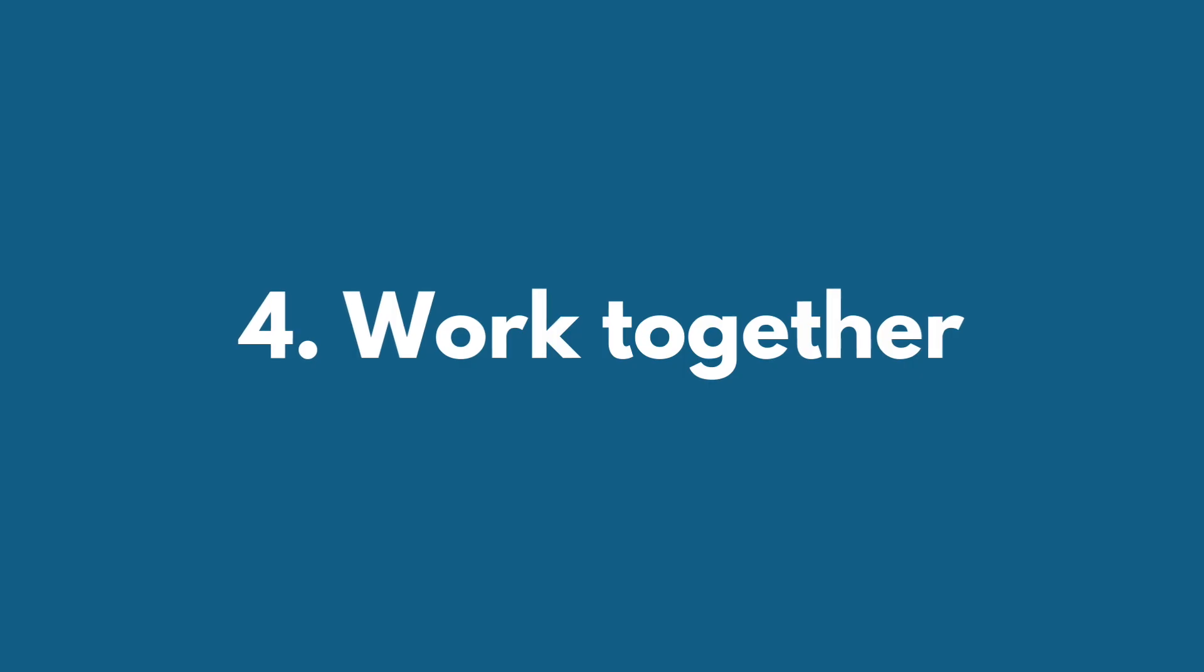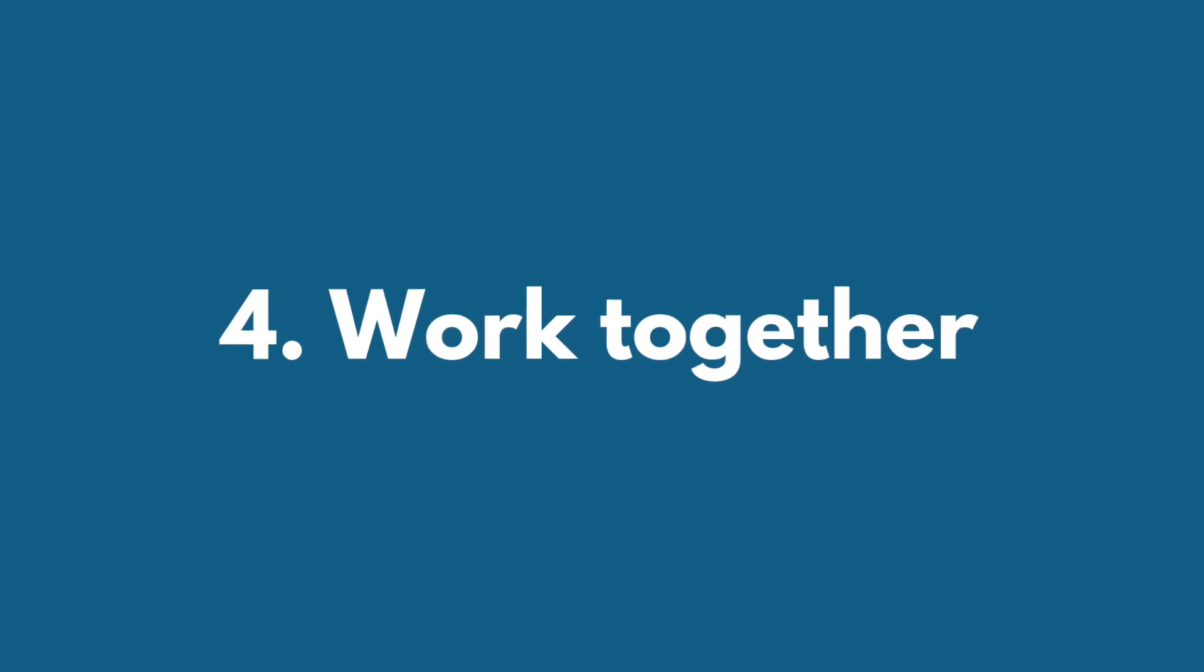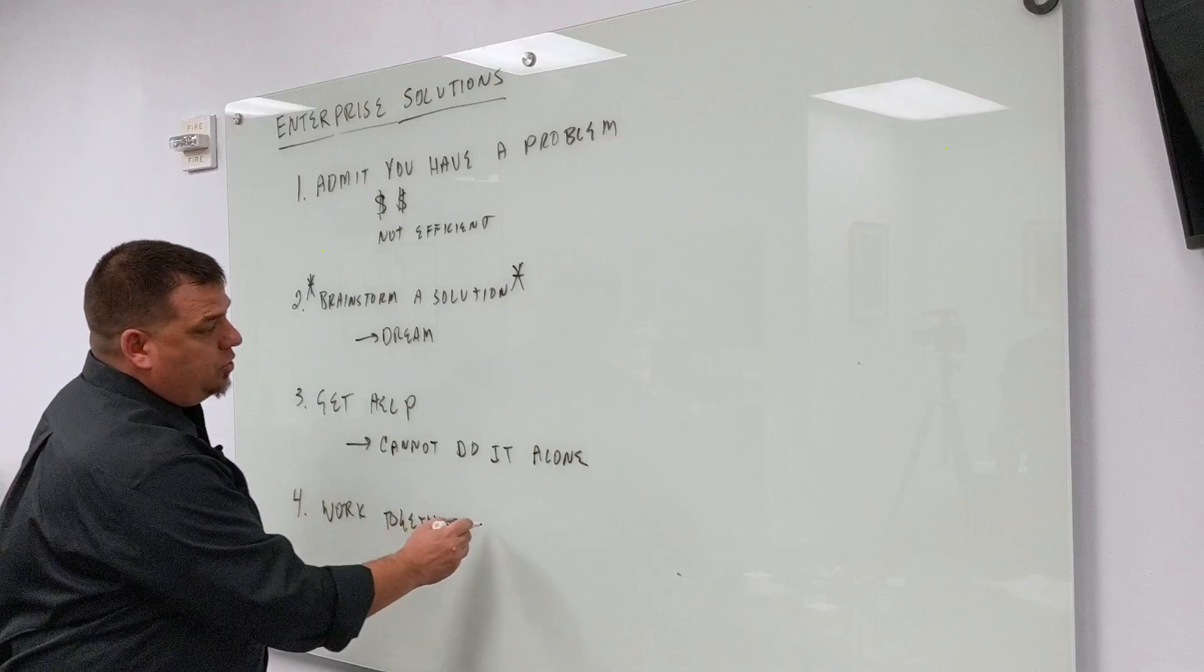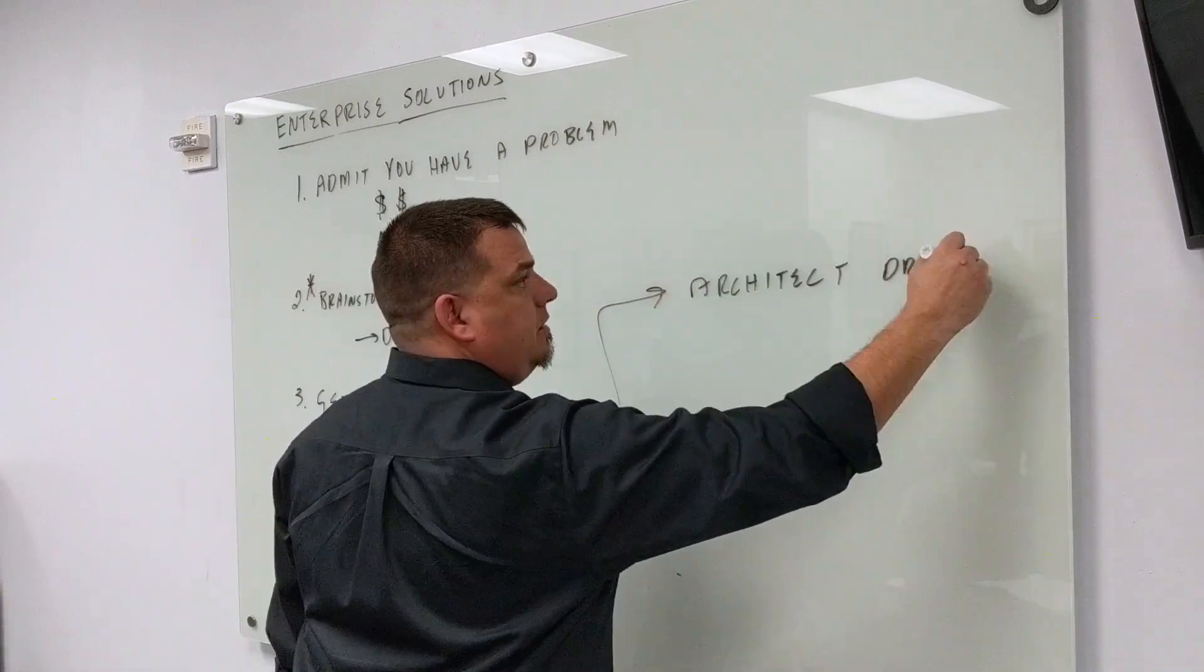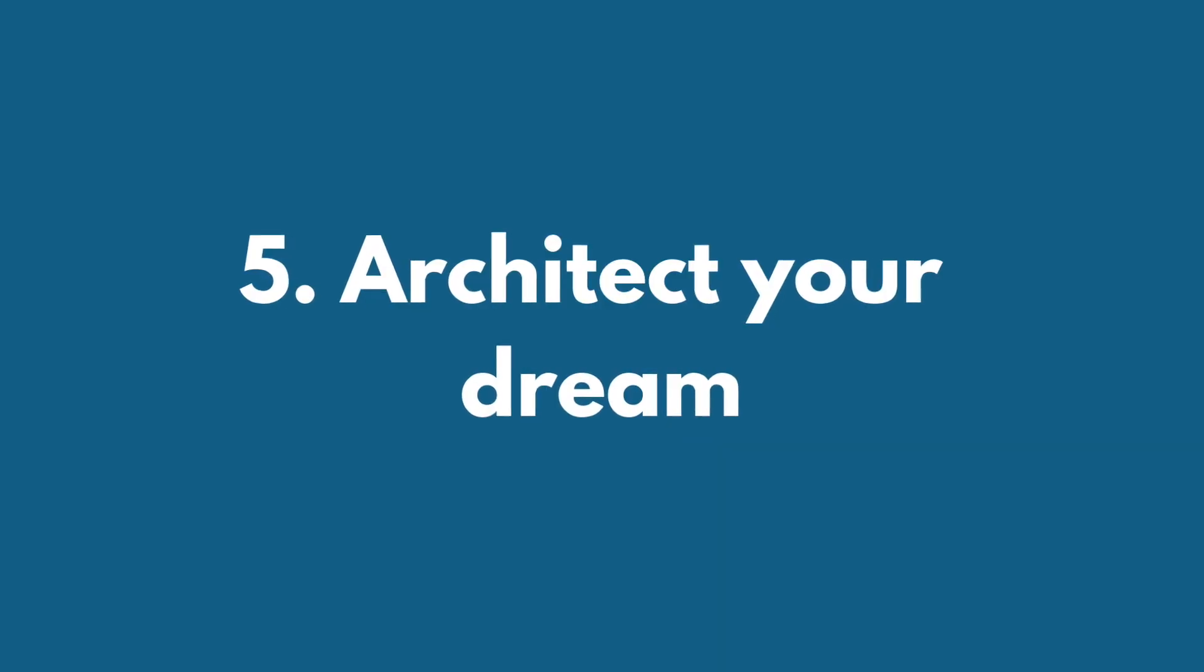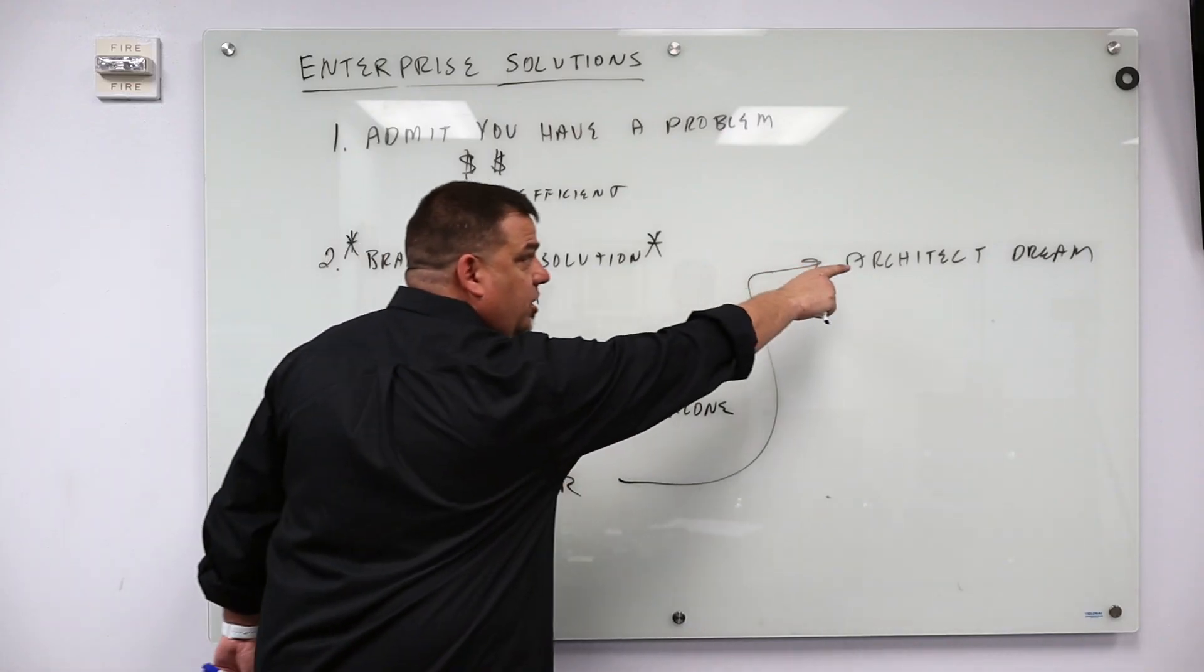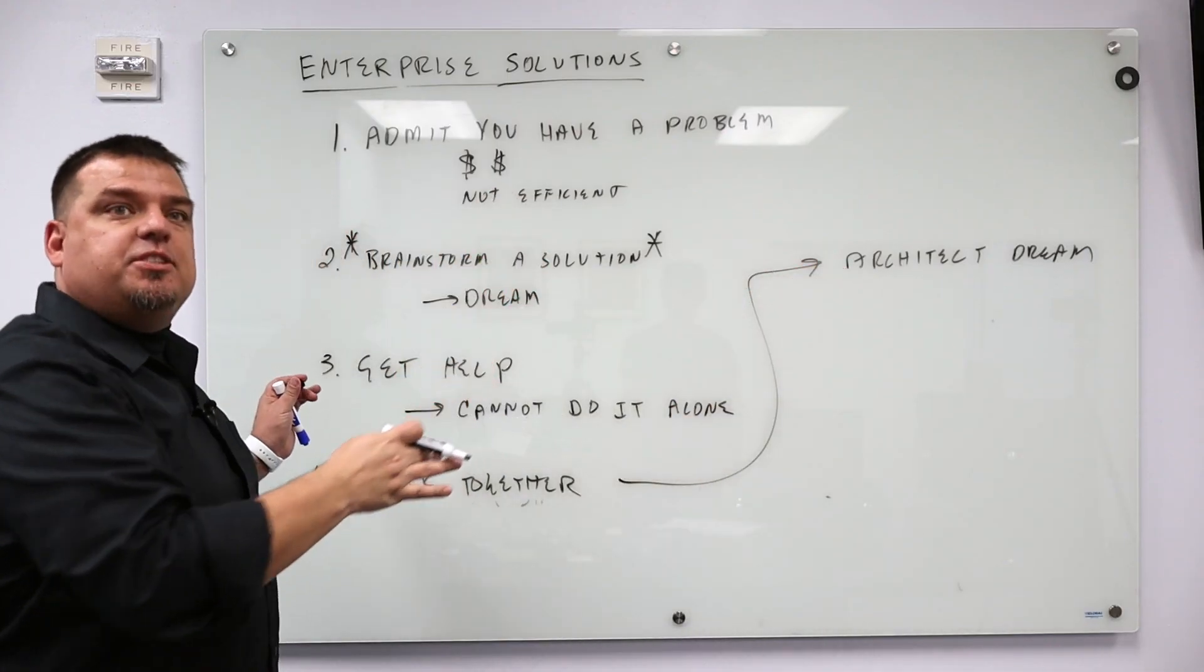Number four, work together. You're going to get help. You're going to get a systems architect. And then you are going to work together to architect your dream. That's what you're going to do. You're going to take that dream, you're going to work with somebody, you're going to work together, and you're going to architect that dream. Those are the steps to digital transformation.